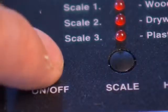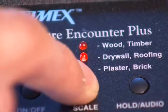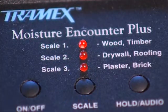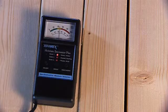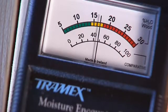Firstly, for testing wood, simply switch on and select the wood scale. Press the instrument firmly against the surface being tested and read the moisture content on a clear, analogue display.